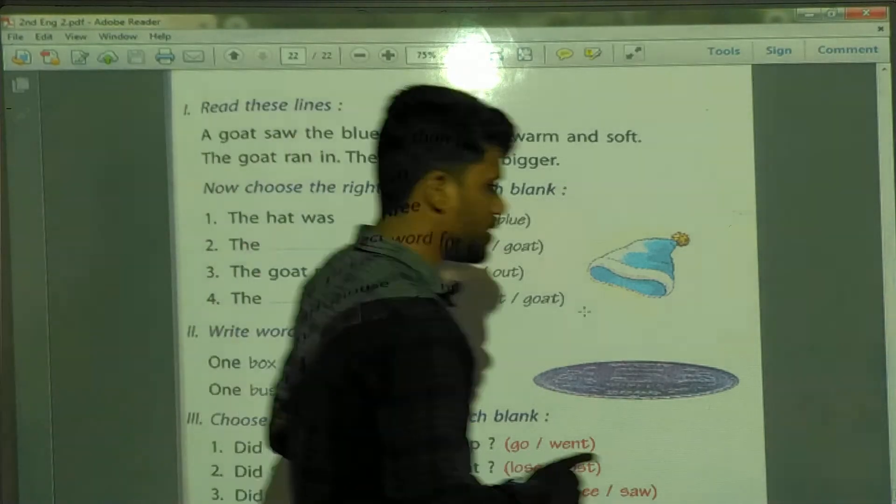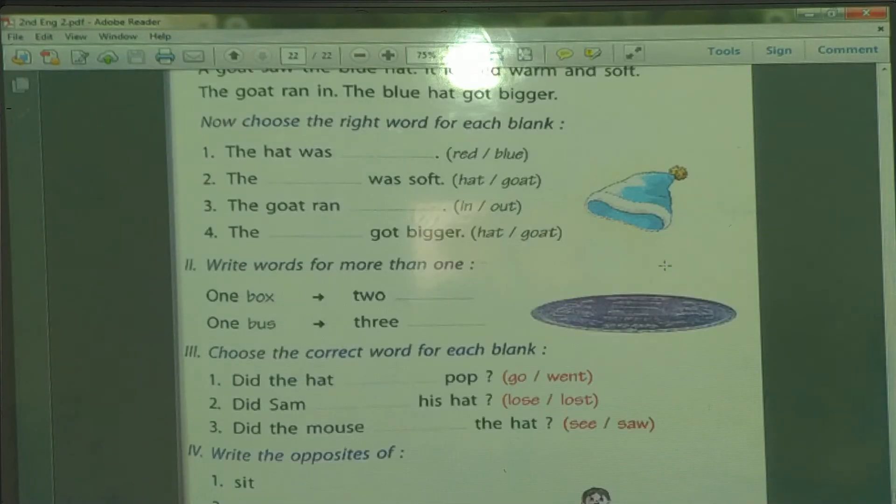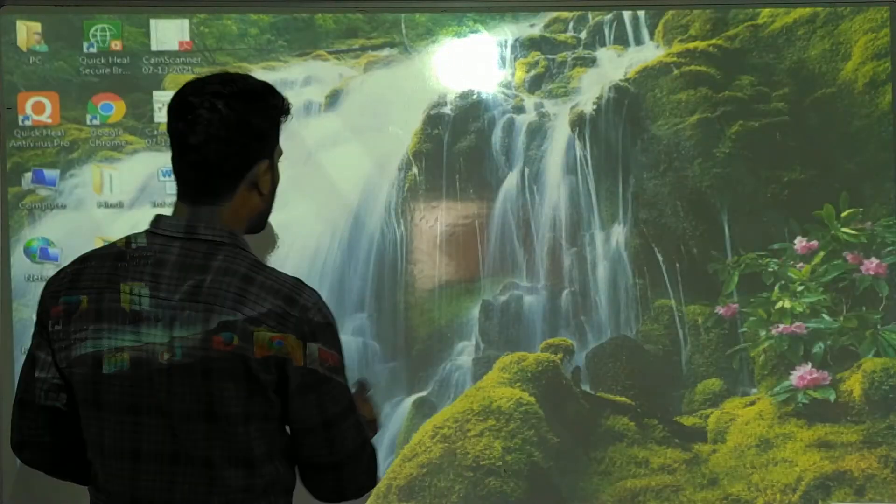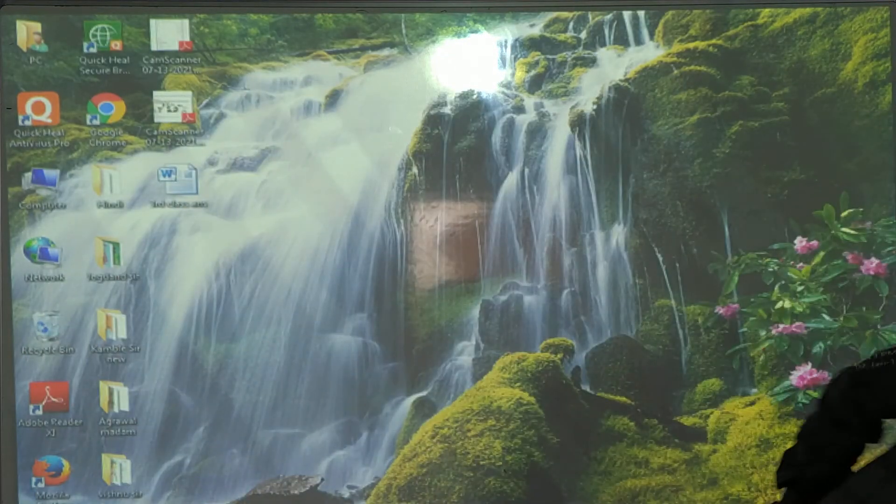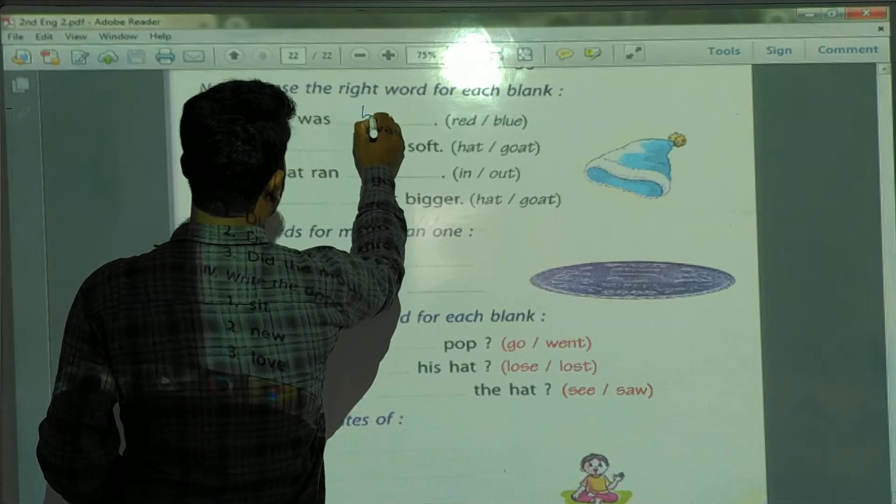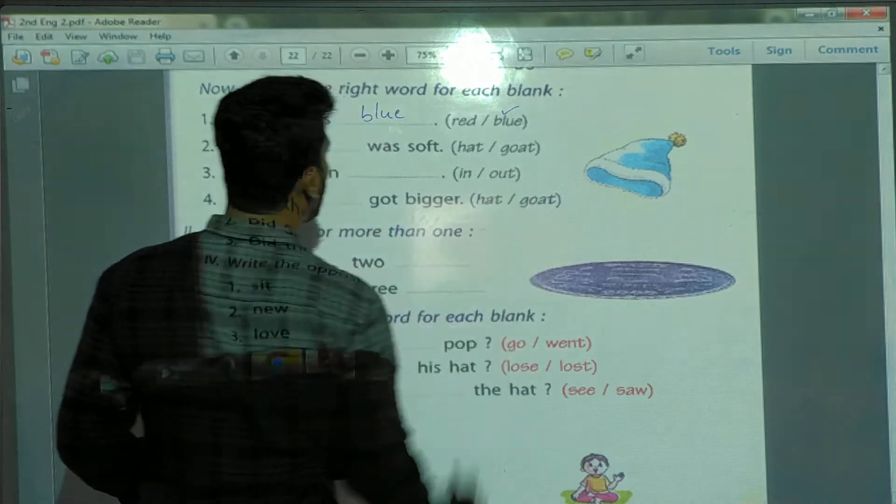The hat was blank. According to the first lesson, Sam's Blue Hat, what was the color of the hat? The color of the hat was blue. The color of the hat was blue.